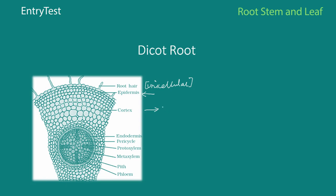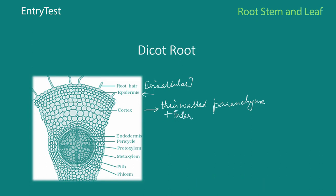Apart from that, you can see the cortex, which is the middle portion. The cortex is made up of thin-walled parenchyma with intercellular spaces between the different cells. The next layer is the endodermis, which is a single layer of barrel-shaped cells. These cells have tangential and radial cell walls with deposits of a material called suberin in the form of strips known as Casparian strips.